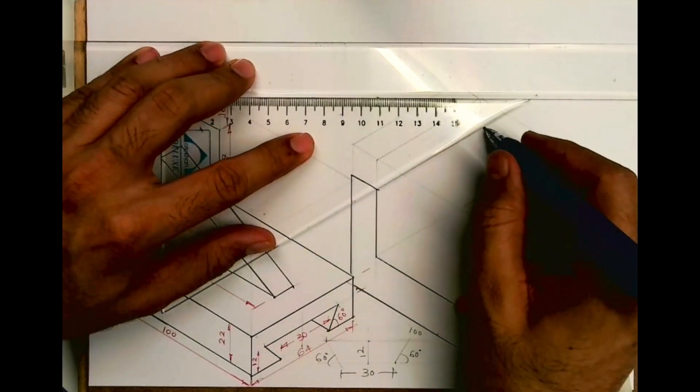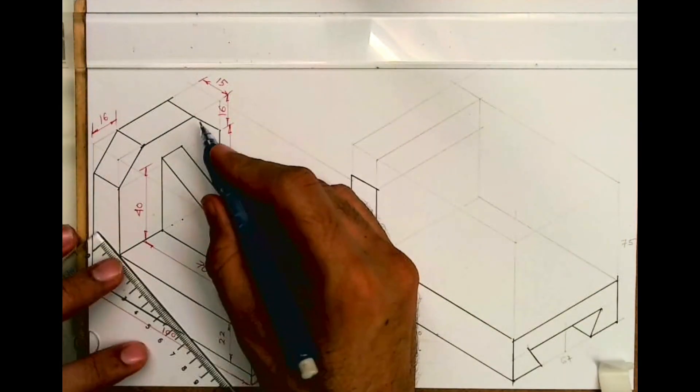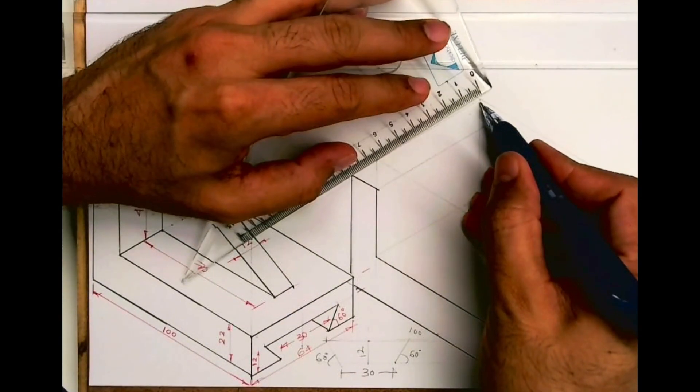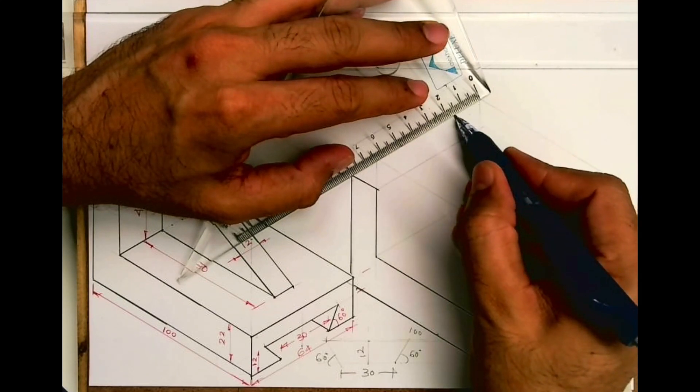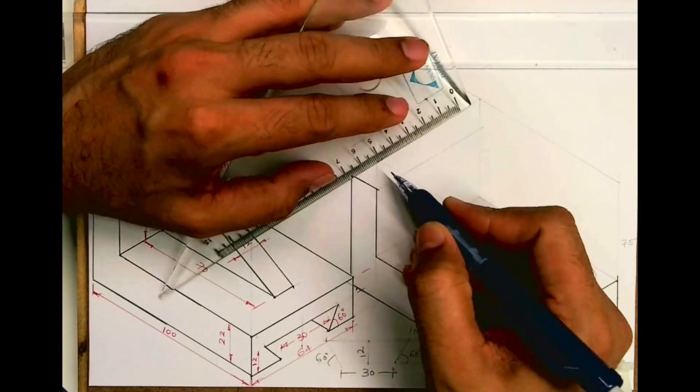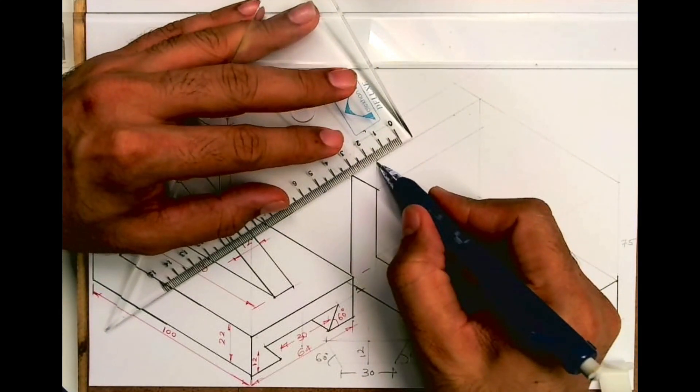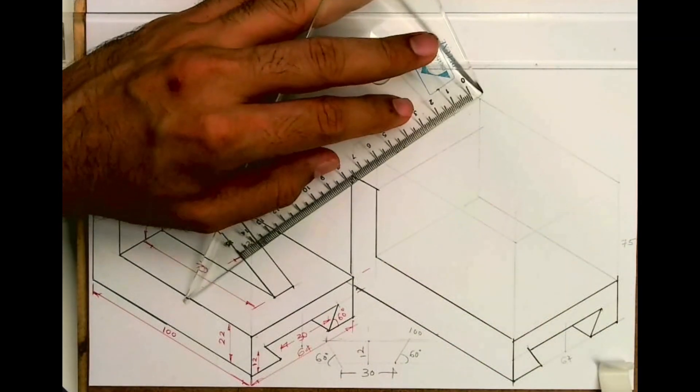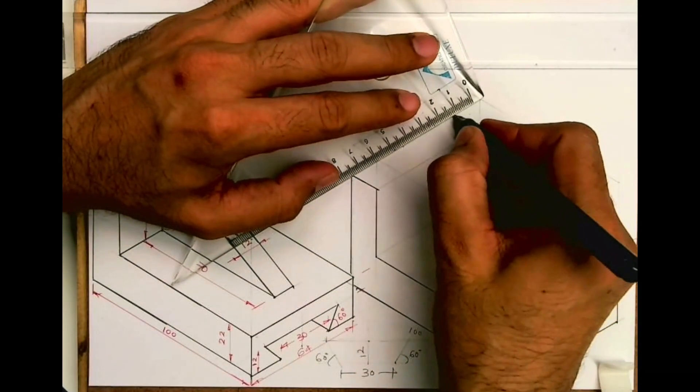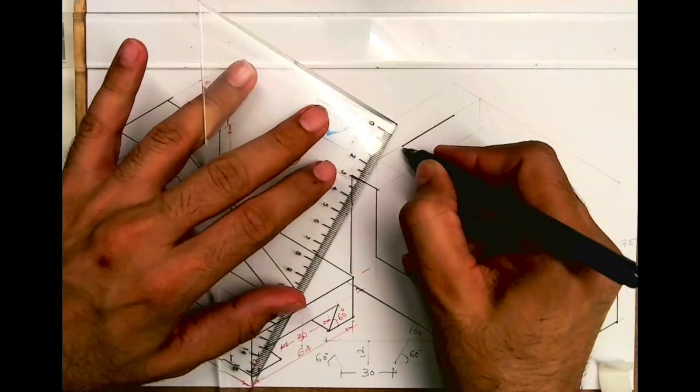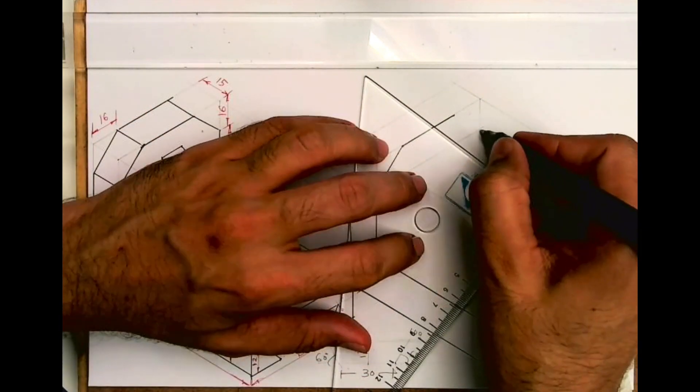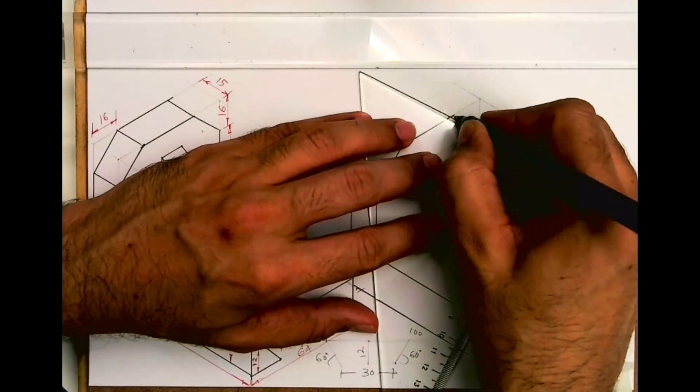After that, from here you extend. How much is this? 16. You take 16 from here and you take 16 from here. Join this line and draw this slope. This is how you will get it.